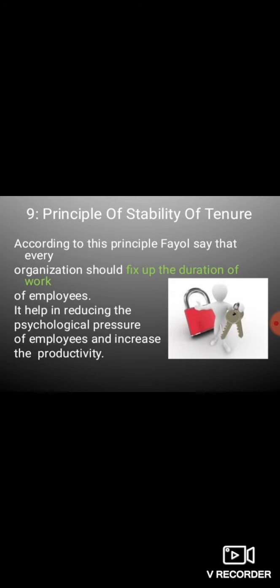Next principle of Fayol is Stability of Tenure of Work। Under this principle, Fayol says कि हमें अपने employees के अंदर से insecurity of job को बिलकुल हटा देना है — उनको एक fixed tenure of work देना है ताकि वो without any psychological and mental pressure के अच्छे से work perform कर सकें और अपनी 100% productivity दे सकें। इस principle का focus है कि employees को job security provide करानी है।